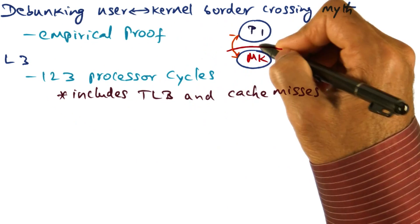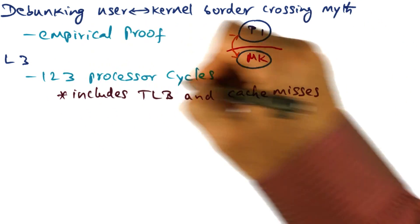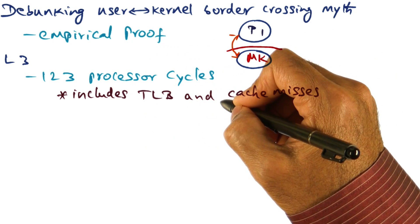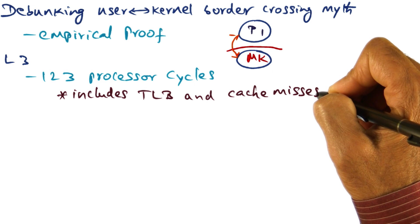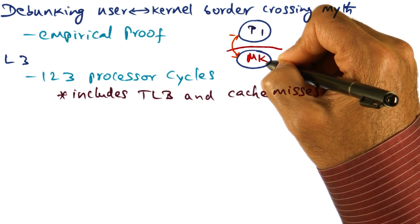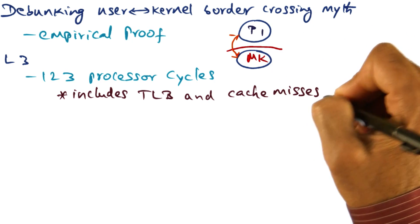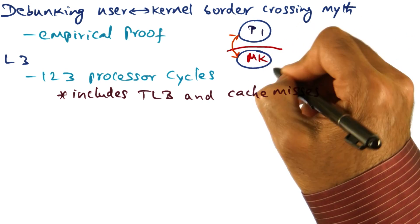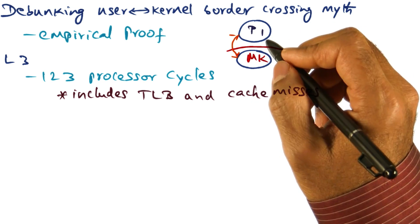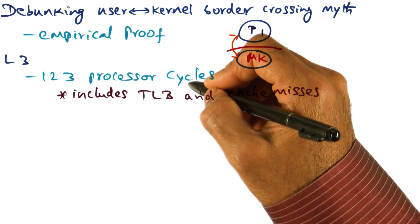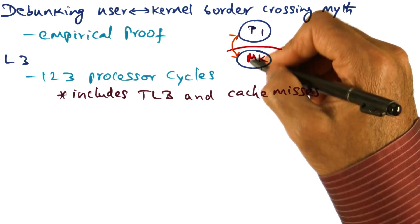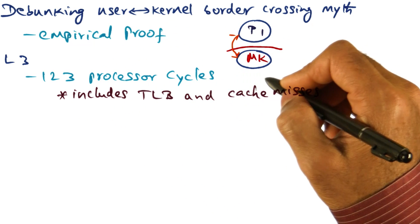Now, L3 accomplishes this border crossing in 123 processor cycles, and this includes the TLB misses that may be incurred because of the fact that we're going from user space to kernel space, as well as cache misses that may be incurred because we're starting to execute some code in the microkernel. All of that put together, L3 shows by proof of construction that you can do that border crossing in 123 processor cycles.